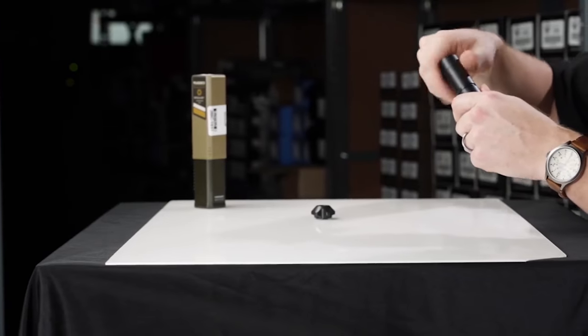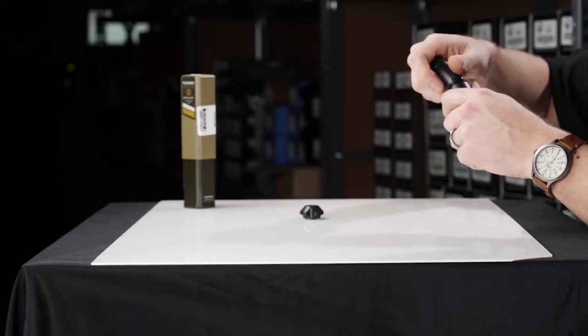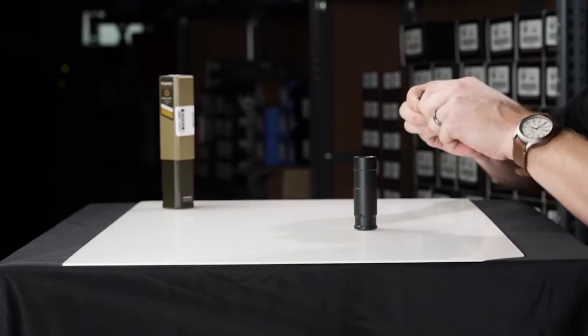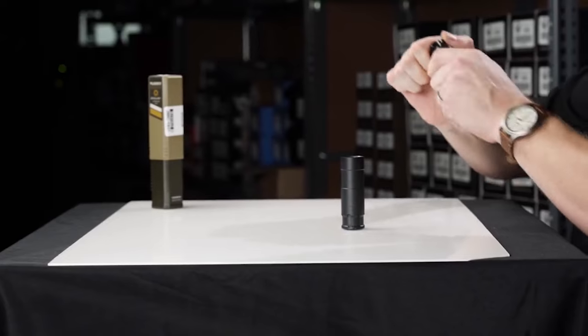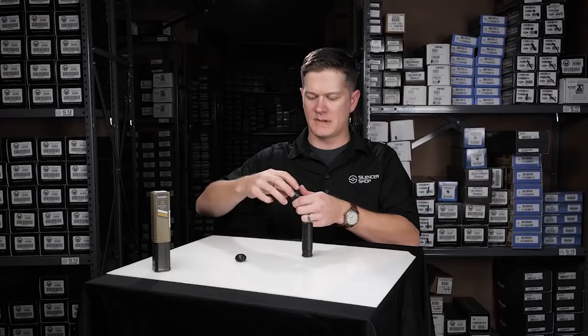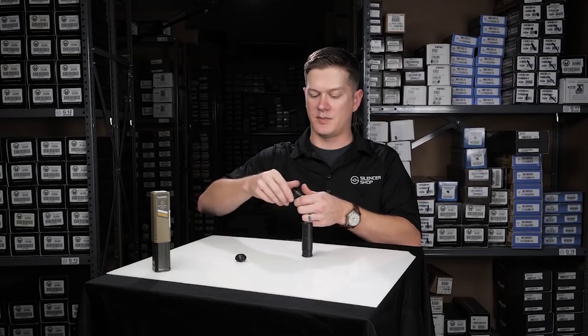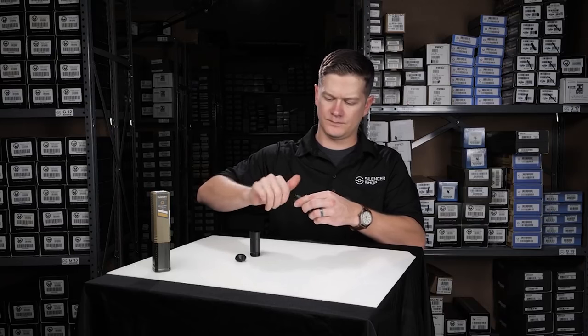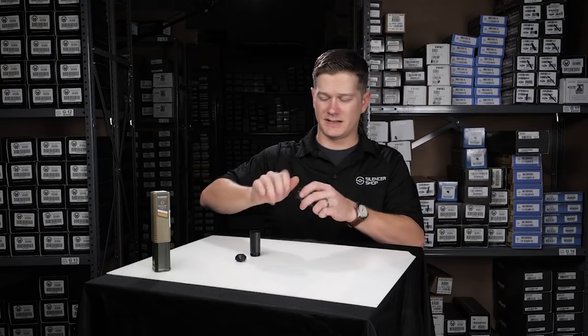To configure it into its other length, simply remove the extension tube and swap the end cap over to the main body. That's really all it takes.